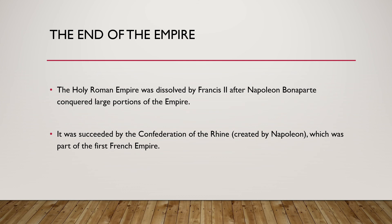The end of the empire — the Holy Roman Empire was dissolved by Francis II after Napoleon Bonaparte conquered large portions of it. During the Napoleonic Wars, Napoleon conquered large parts of the empire and basically told the emperor to end it, declaring himself the only emperor. Napoleon then created what was called the Confederation of the Rhine, which was basically a French-controlled German state in the remnants of the Holy Roman Empire, and that's what succeeded it.